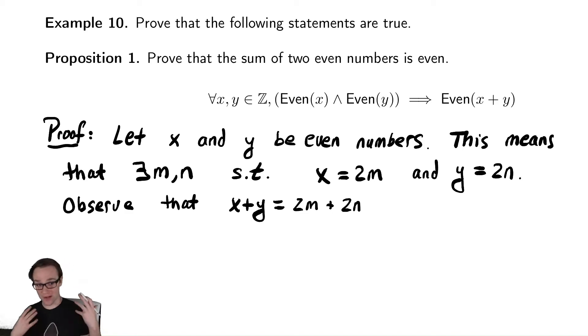Now I want to finish writing x plus y as a multiple of two. With basic algebra, we should realize that we can factor out a 2 from that expression, and then we have 2 times m plus n.